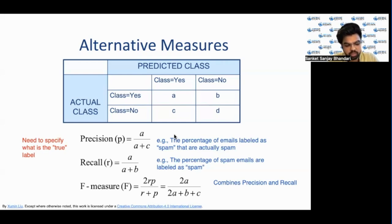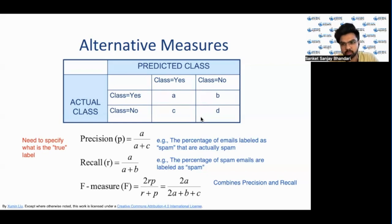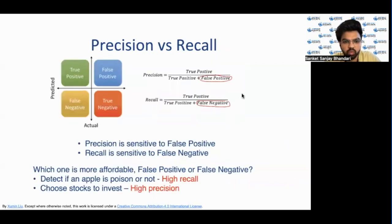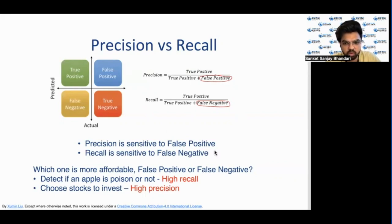So precision calculates how precise you were when calling a sample positive or negative, and recall calculates how much you were able to recall your positive samples. This terminology can be confusing, but if you remember it in simple terms it is easy. As discussed, precision is sensitive to false positives and recall is sensitive to false negatives.